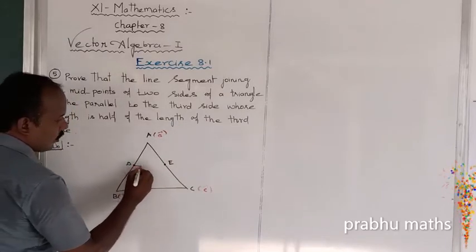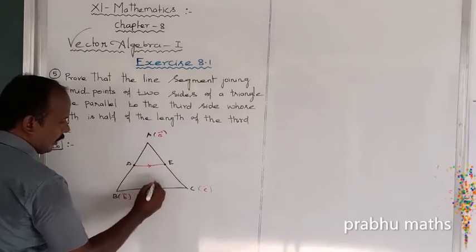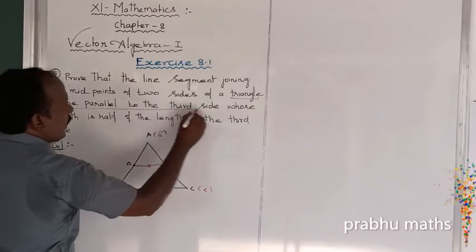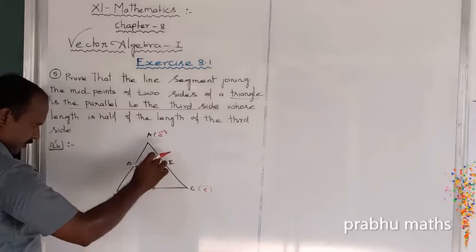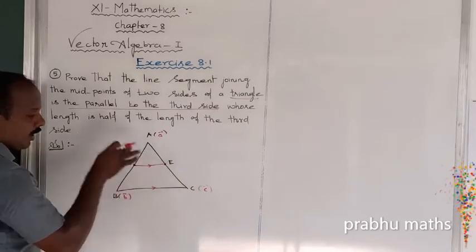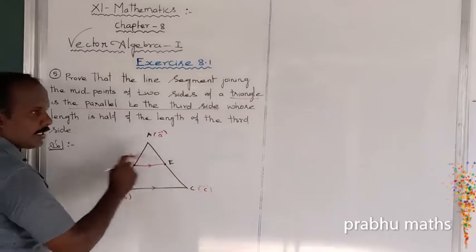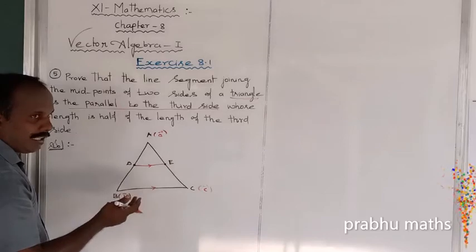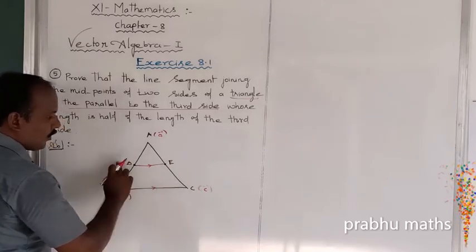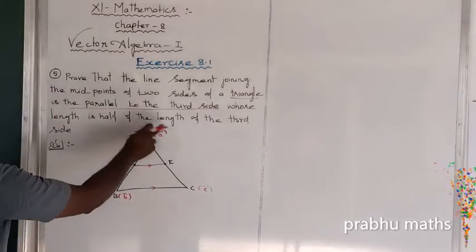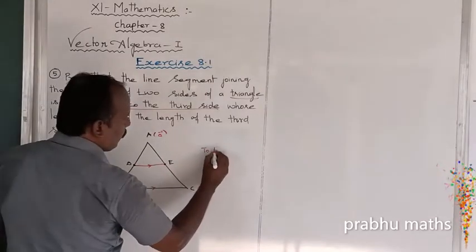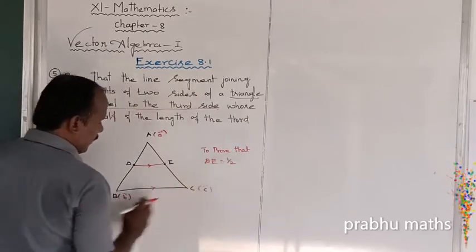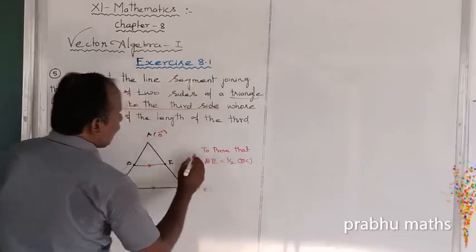Joining the two midpoints D and E — this line DE is parallel to the third side BC. So for any two sides, you find the midpoints, join them, and the resulting segment is definitely parallel to the third side. We also need to show that BC equals half of DE, meaning DE is equal to one-half times BC. That is the given statement to prove.